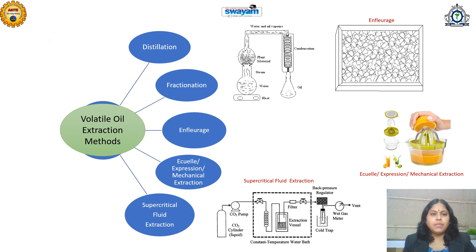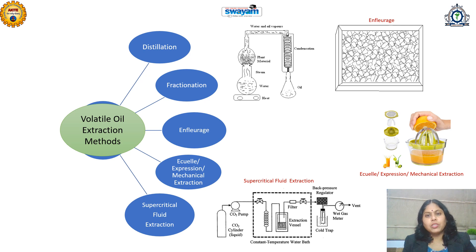Here we will learn the various methods for the extraction of volatile oil. Volatile oil is also called as essential oil because it shows the presence of the essence of the components of that plant. It is also called as aromatic oil because it has a specific type of aroma, and due to this there is great demand in the market — in perfume, cosmetic, toiletry, food, and pharmaceutical preparations. These volatile oils can be obtained from distillation, fractionation, enfleurage, the Ecuelle method which is also called expression or mechanical method, supercritical fluid extraction, and phytonics.